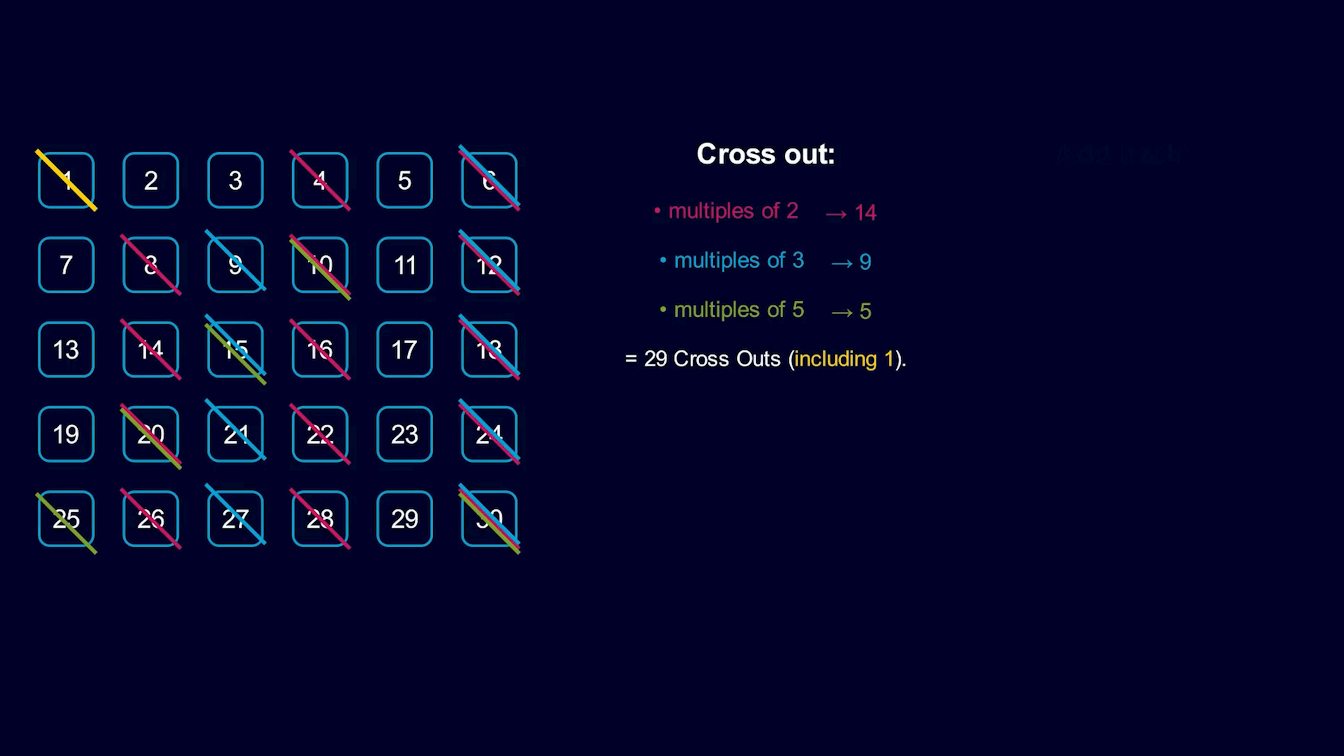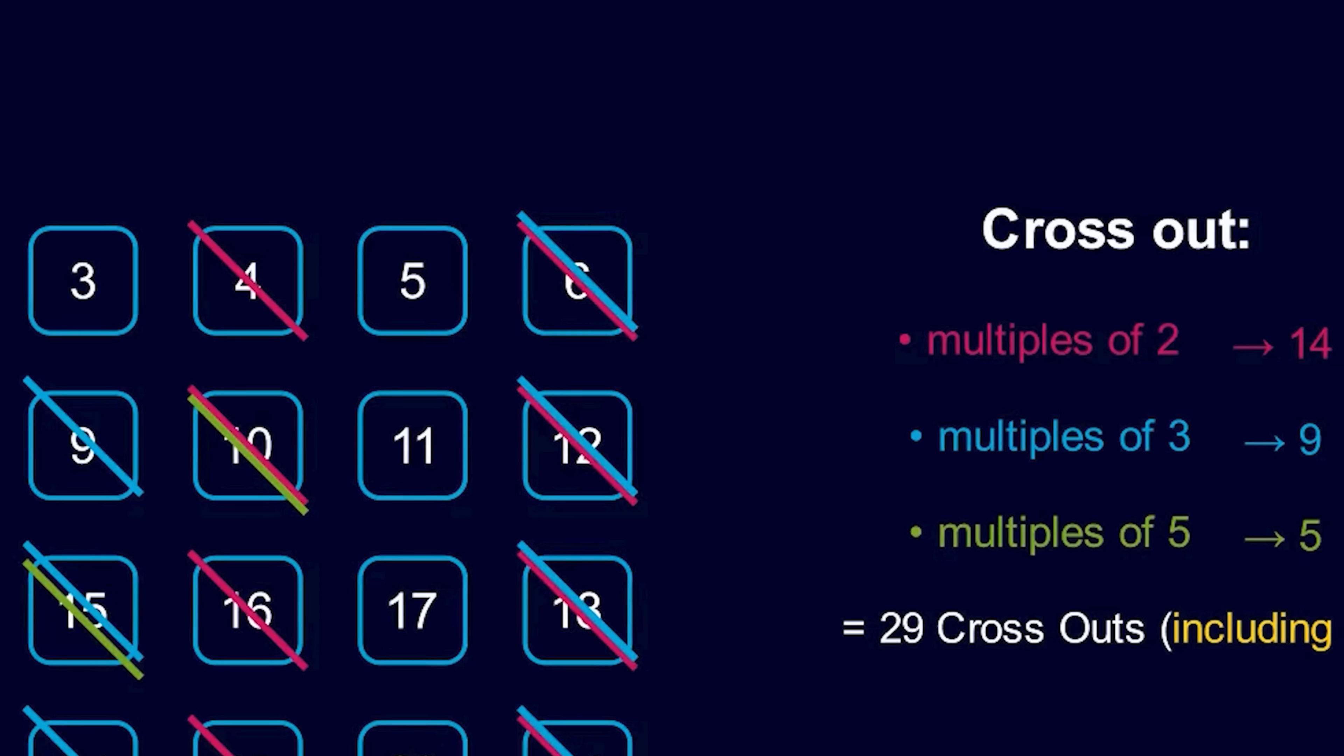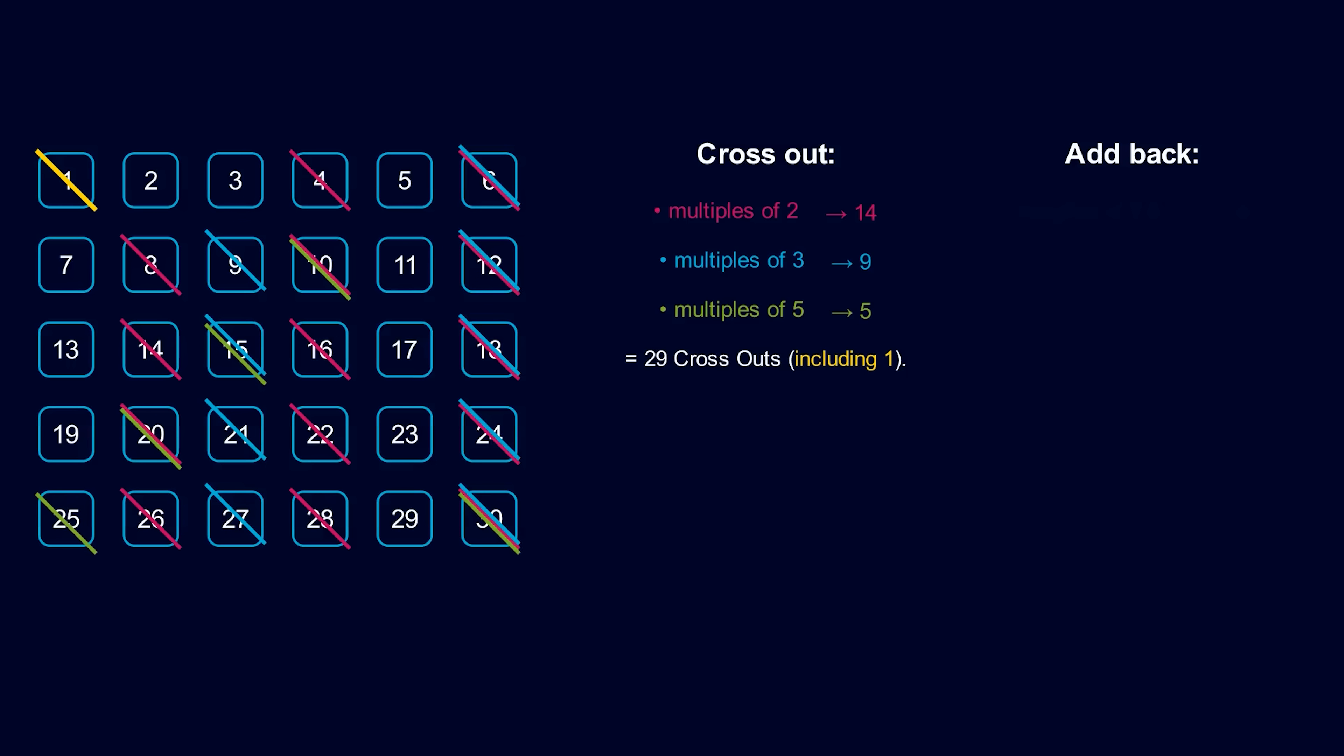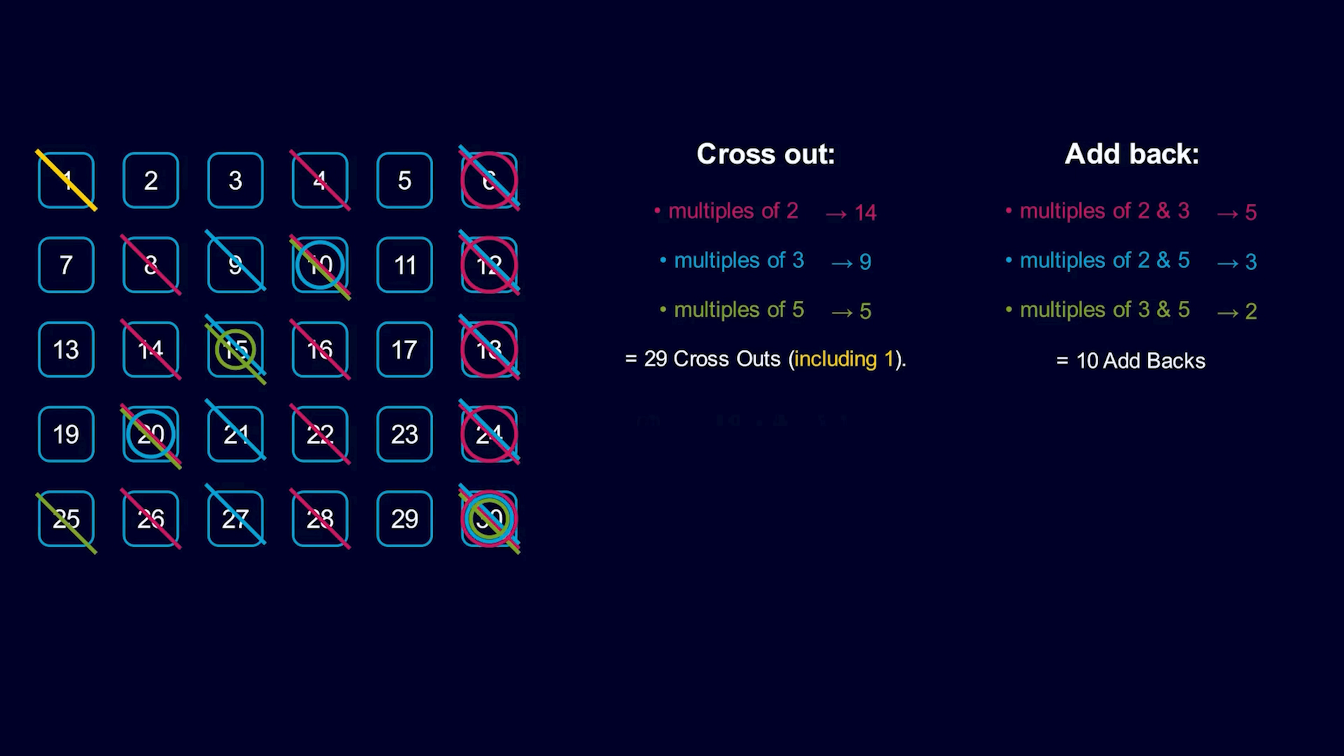For example, we crossed out the number 6 twice. Once when we crossed out the multiples of 2, and once when we crossed out the multiples of 3. We have to add back all the multiples of 2 and 3, because we crossed them out twice. Likewise, we add back all the multiples of 2 and 5, then we add back the multiples of 3 and 5. In total, we're adding back 10 numbers.